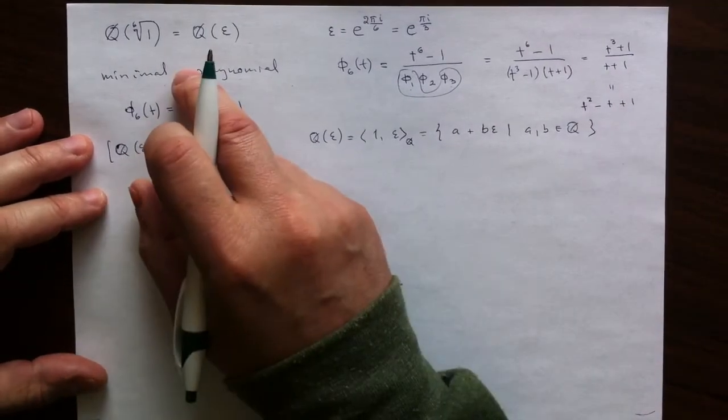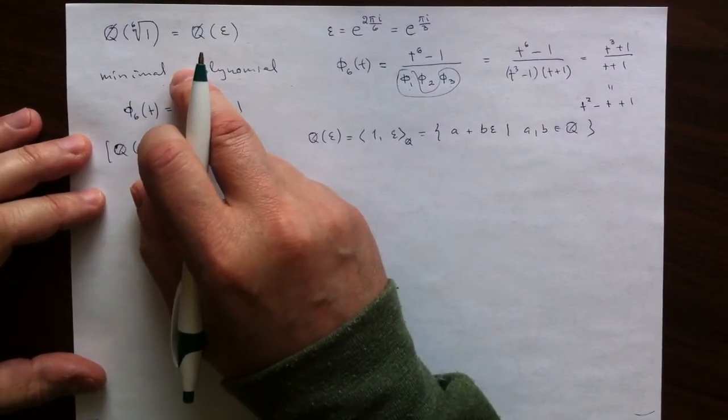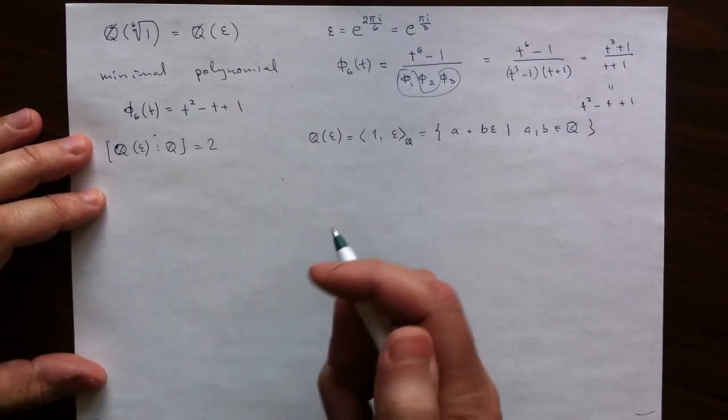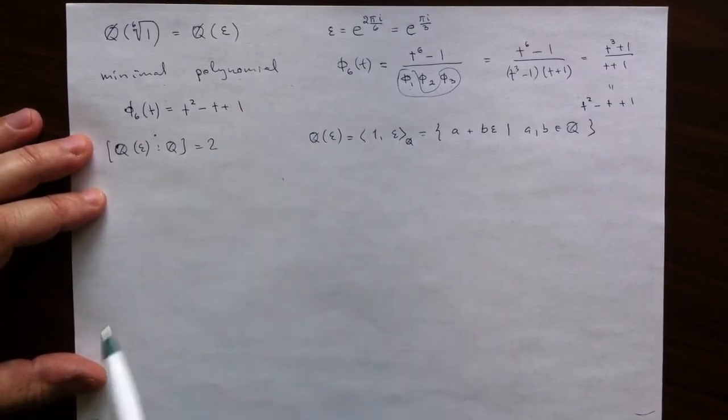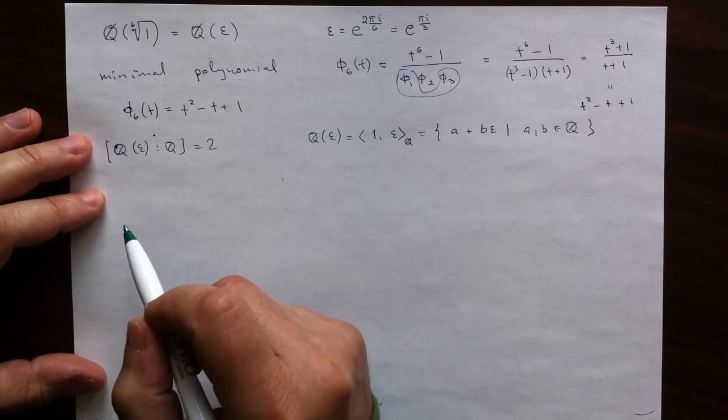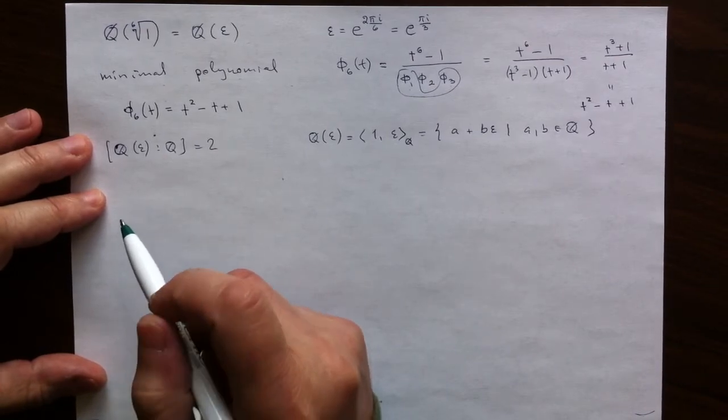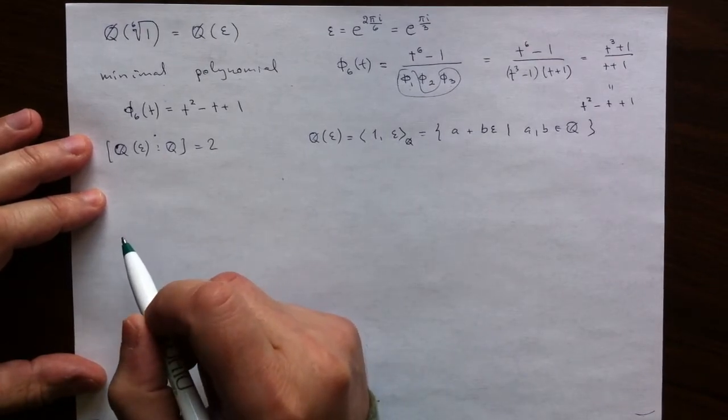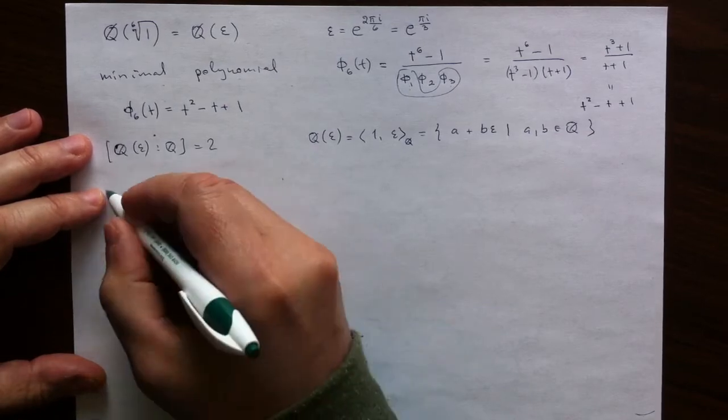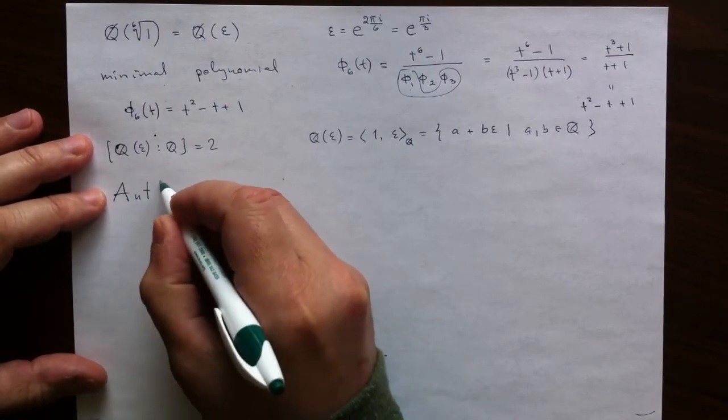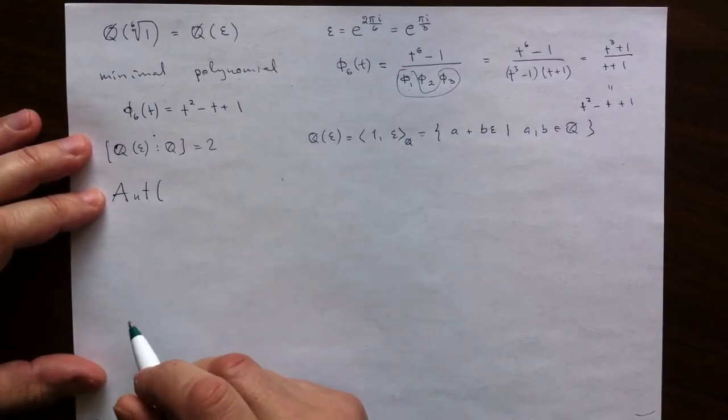So now we are going to compute the symmetry group of this extension, which is not going to be larger than 2, but it is going to be actually equal in size to 2. So that will be a Galois extension. And then, using the symmetry group, we will compute the trace and the norm and the inverses.